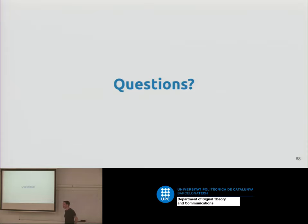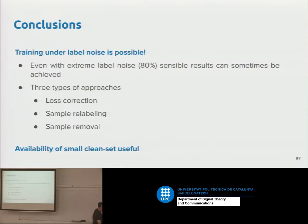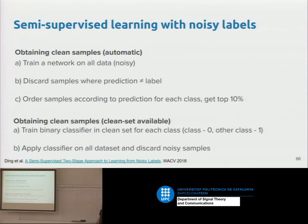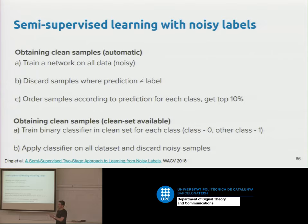Question about the second approach: given a clean set of data, we can train a binary classifier for each class to determine whether a label pair is correct or noisy, then apply that binary classifier to give confidence that a sample is clean or noisy.